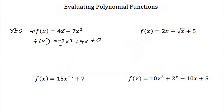Let's look at our second example. We have f(x) = 2x − √x + 5. This is not a polynomial function, and that's because of the square root of x. This square root is not a whole number exponent, so because this is not a whole number exponent, this is not a polynomial function.